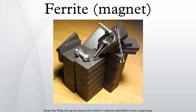In contrast, permanent ferrite magnets are made of hard ferrites, which have a high coercivity and high remanence after magnetization. Iron oxide and barium or strontium carbonate are used in the manufacturing of hard ferrite magnets. The high coercivity means the materials are very resistant to becoming demagnetized — an essential characteristic for a permanent magnet.